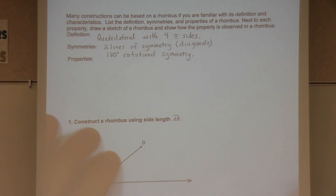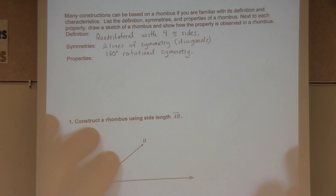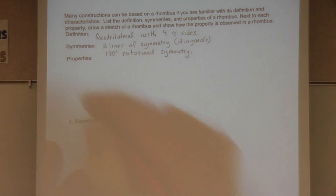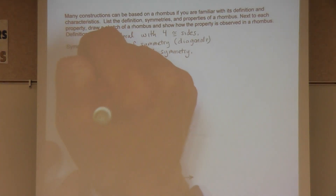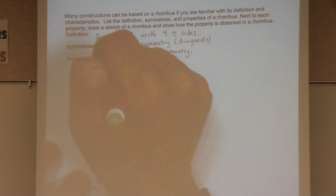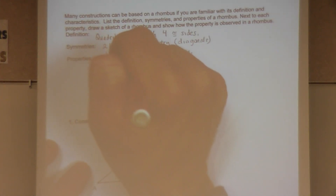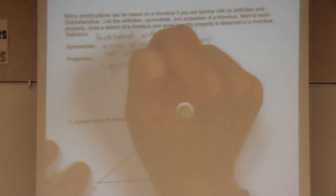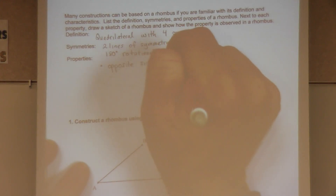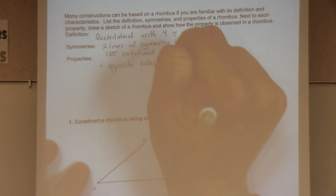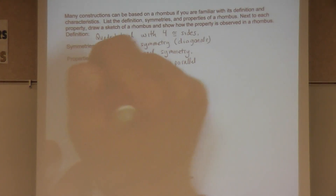In addition, there are certain properties of the rhombus that help us do the constructions. In addition to the definition of four congruent sides, in a rhombus the opposite sides are also parallel, and opposite angles are congruent.